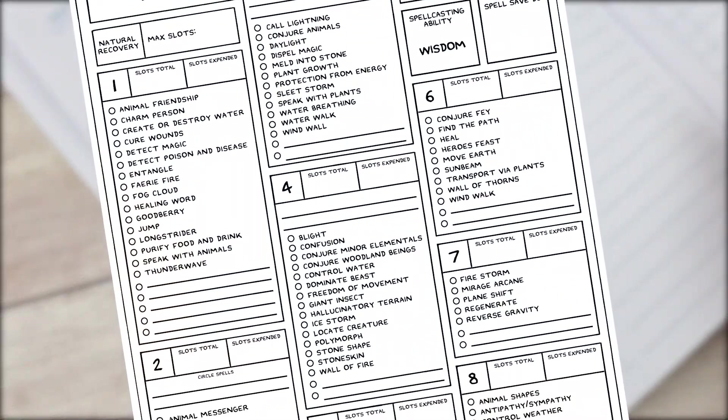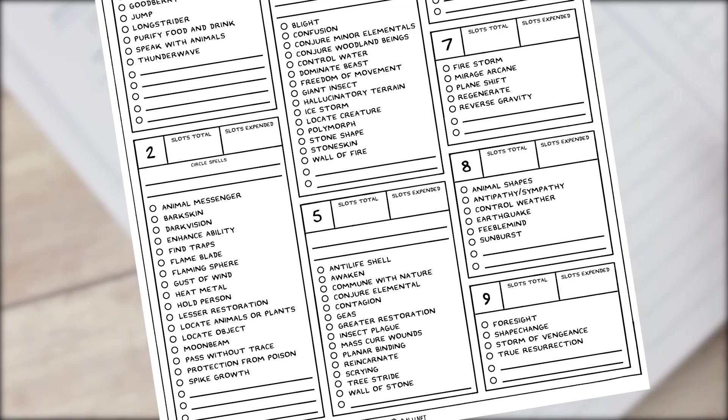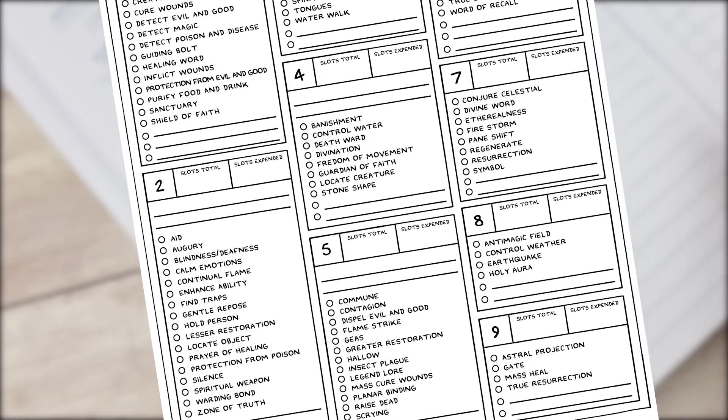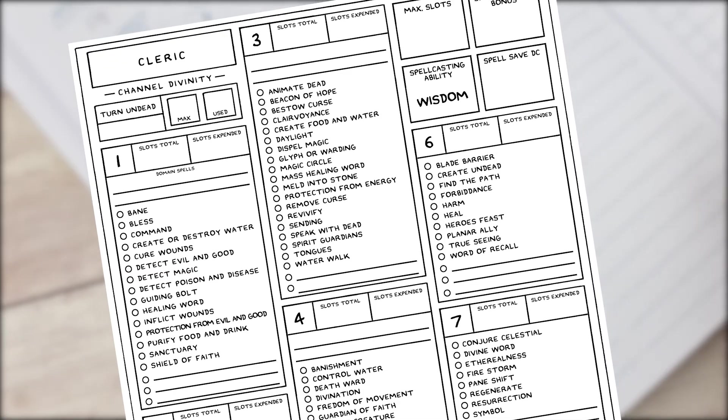Some classes such as Druid and Cleric choose from a list of spells each day which means their known spells can regularly change. Class specific sheets already come with this list you can choose from but you can also note down which spells you've chosen each day as you go.